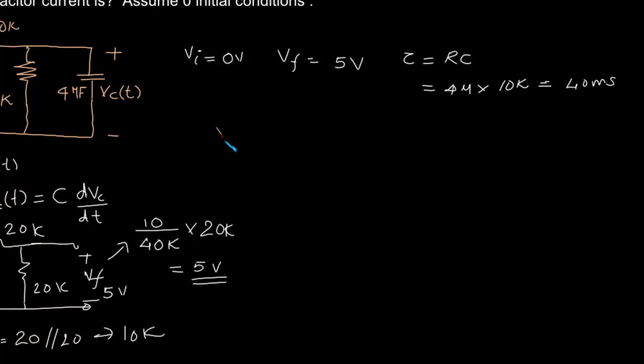Now we know that the voltage of the capacitor is given by the equation V final plus V initial minus V final into exponential of minus t by tau. That is 5 plus 0 minus 5 into exponential of minus, one by 40 milliseconds is 25, so minus 25t.